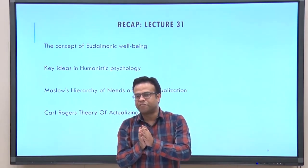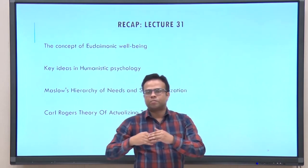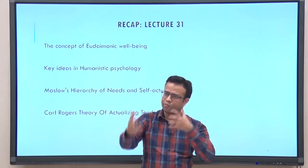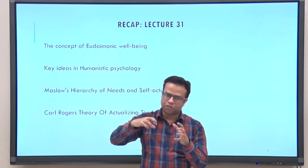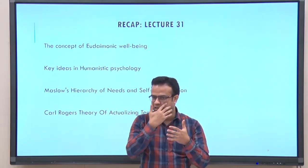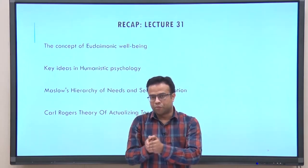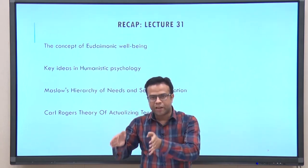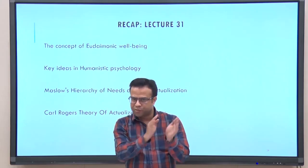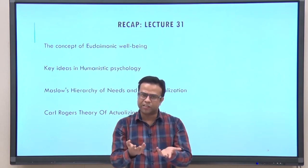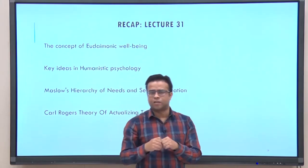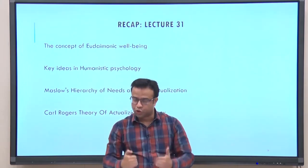In the process of self-actualization, human beings created societies and cultures which developed their own conditions, rules, regulations, and expectations from the outside world. These conditions of worth — that you will be loved and accepted only when you fulfill certain criteria — sometimes create obstacles and people get led astray from their self-actualization tendencies. Rogers said the higher the difference between real self and ideal self, the higher will be your neurosis or emotional instability.